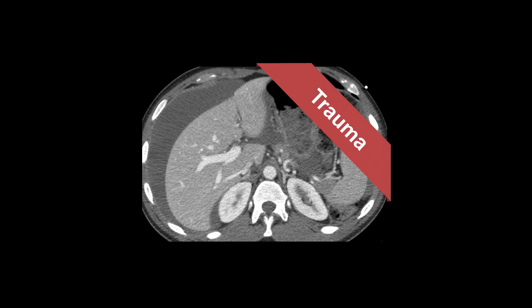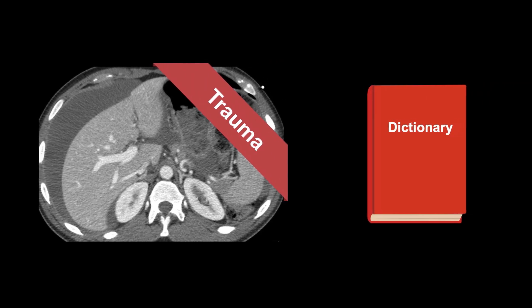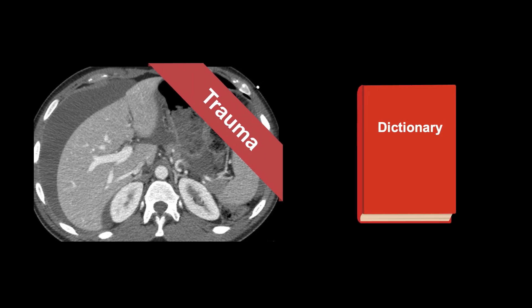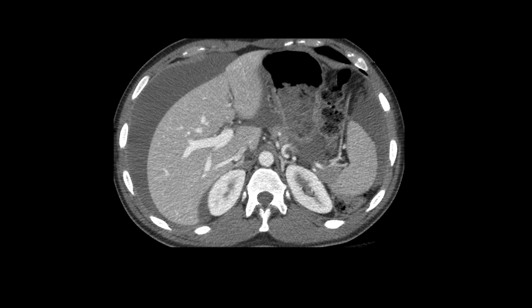In order to understand trauma scans, you will need to use new terminology that characterizes abdominal injuries. As you begin your review of a trauma CT, one of the first things that alerts you to the presence of significant injury is blood surrounding an injured organ and spreading throughout the abdomen.